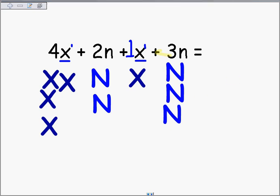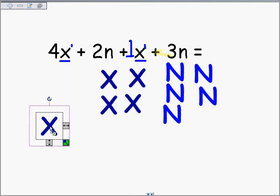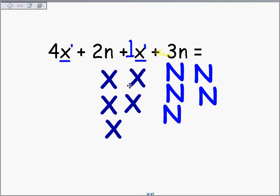So these all go over here. So let's see what we have. 4x plus 1x is 1, 2, 3, 4, 5x. I have 5x.